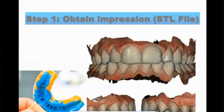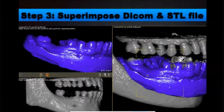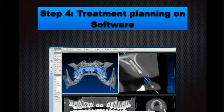Step one: obtain a surface scan or impression of the patient. If you have an intraoral scanner, scan directly; otherwise use a rubber-based impression with an extraoral scanner to form an STL file. Step two: obtain a CBCT of the patient. CBCT is very important — without it, we cannot imagine 3D guided endodontics, as it is entirely based on DICOM data. Once you have your STL and DICOM files, you need software to superimpose them. Then plan your treatment.